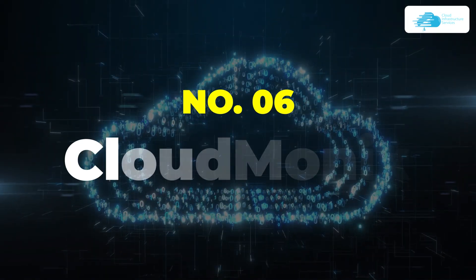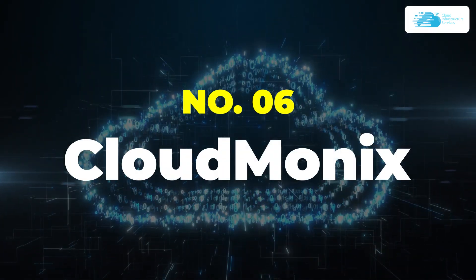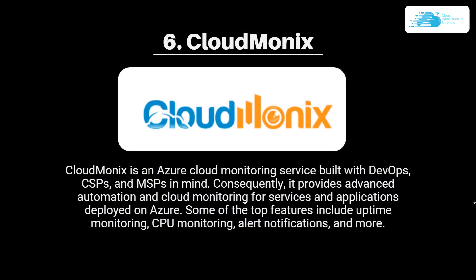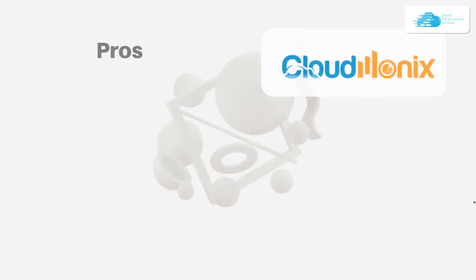Number six on our list is CloudMonix. CloudMonix is an Azure cloud monitoring service built with DevOps, CSPs, and MSPs in mind. It provides advanced automation and cloud monitoring for services and applications deployed on Azure. Top features include uptime monitoring, CPU monitoring, alert notifications, and much more.